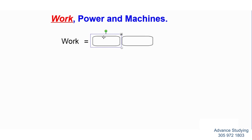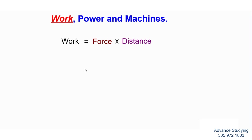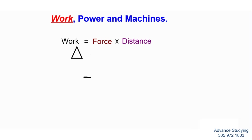Work is the force times the distance that is traveled. For example, if you are lifting up an object, this was your starting position, and then you lift it up all the way to there — that's your ending position. What you have moved is the distance from the black line to the red line. That distance, combined with how much force you used to move that object, is work.